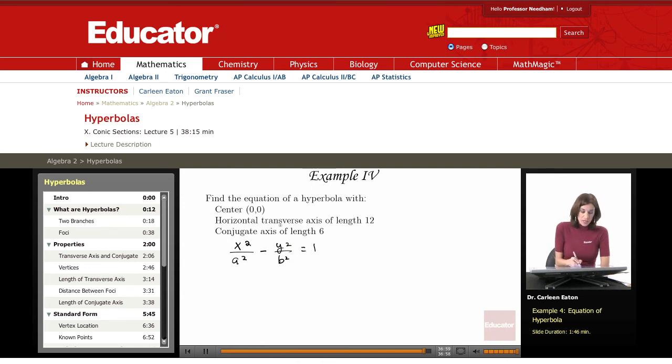The horizontal transverse axis has a length of 12. The transverse axis length, recall, is equal to 2a. I'm given that that length is 12. If I take 12 divided by 2, that's going to give me a equals 6.